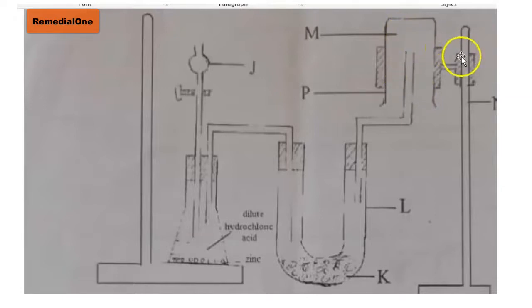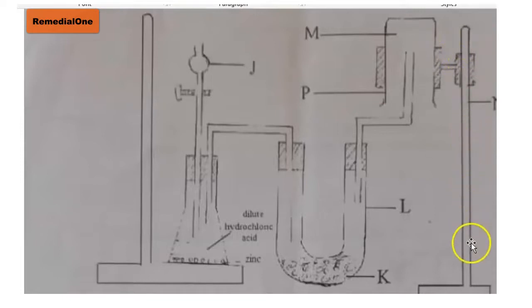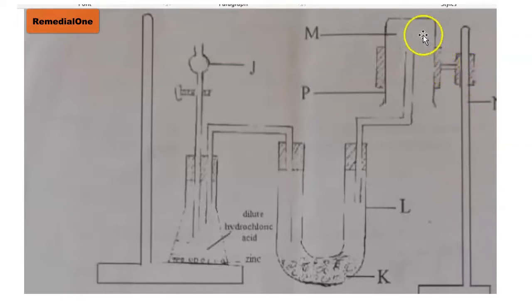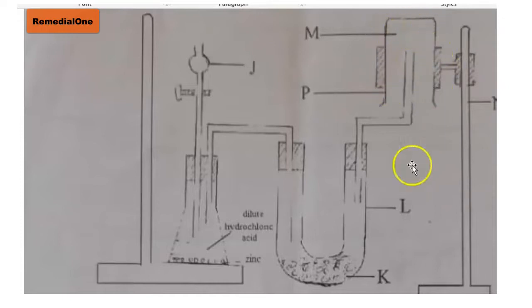There is also a retort stand here with a clamp. The clamp is holding the gas jar in place in this diagram. That is all about this diagram.